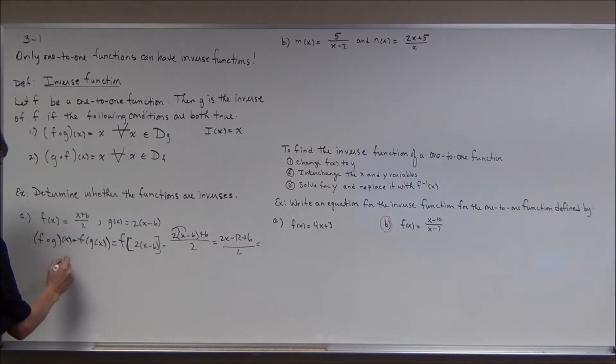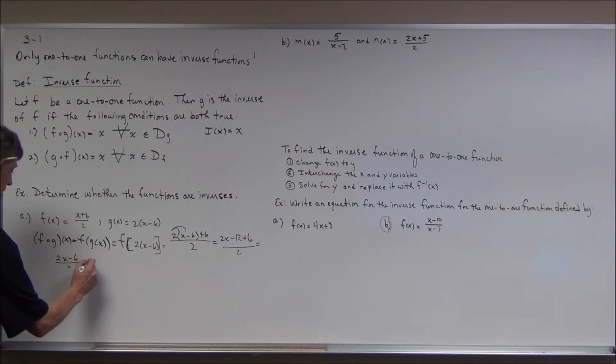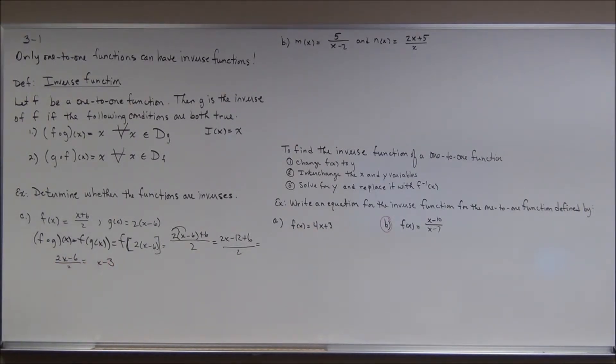Combined like terms, I get two x minus six divided by two. And if I divide two into both, I get, it looks like two x minus, or excuse me, it looks like I get x, but I get a minus three because of the division right here. So this is no good.